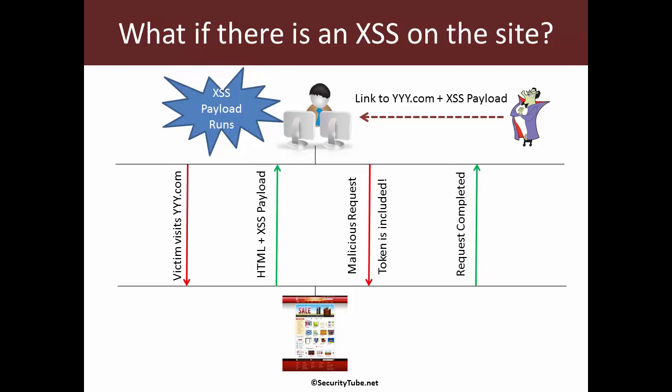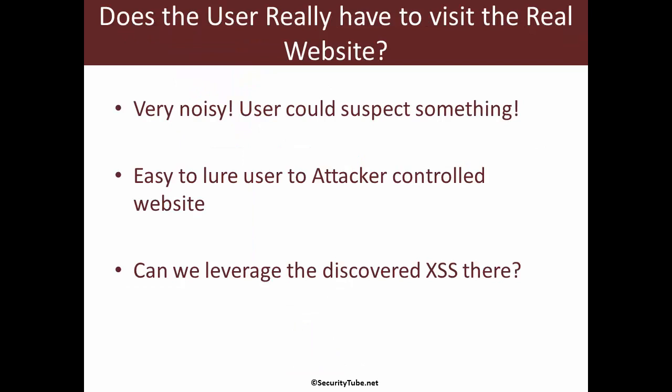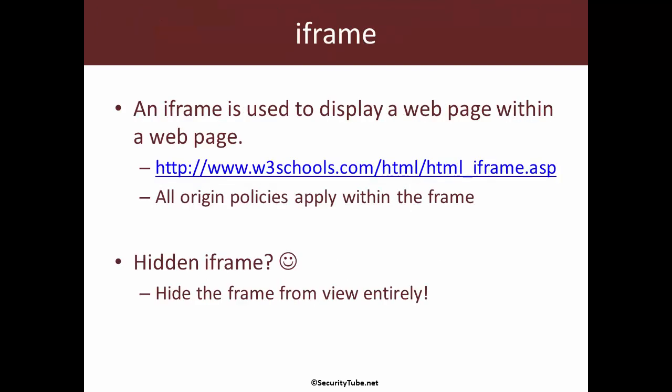Assuming the victim might load up the site for us is an oversimplification. Ideally, what we would want is for the victim to land on an attacker-controlled website — which could be any site on the internet the attacker controls entirely or has found injection vulnerabilities in. At that point, the attacker should be able to conduct the same XSS-based CSRF token stealing as in the last video. So how do we do this?